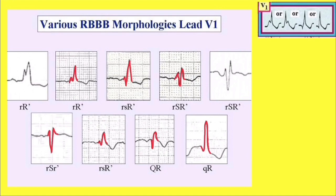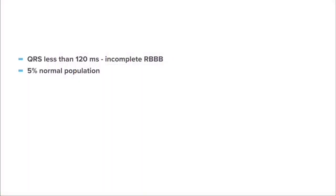In RBBB, the QRS is usually more than 120 milliseconds. If an ECG shows features of RBBB but the QRS is less than 120 milliseconds, this is called incomplete right bundle branch block, which is present in 5% of the normal population. It is usually seen in patients with bronchial asthma, COPD, pulmonary embolism, and right ventricular hypertrophy.